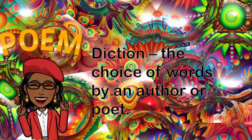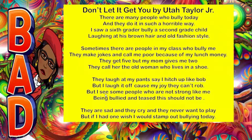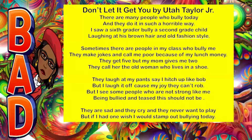Diction is the choice of words by an author or a poet. Diction is very important — what do the words do, or what kind of effect do they have when we read them, not only in our sentences or essays, but how do they affect the overall poem? Here are some things highlighted: 'old fashioned style' and 'I hitch up like Bob.' That last one is kind of a humorous statement. 'Old fashioned style' gives us a visual as to how the child could possibly be dressed — maybe wearing an old plaid style no longer used in fashion today.